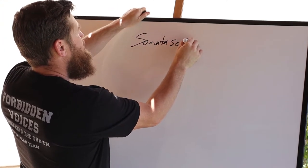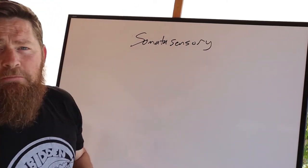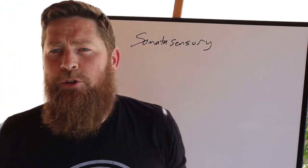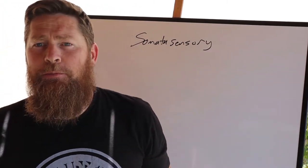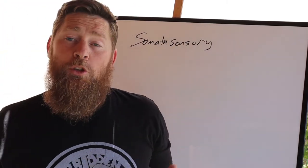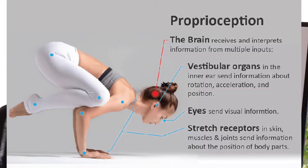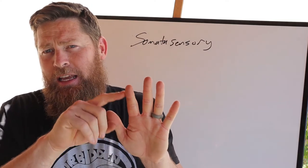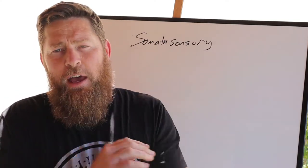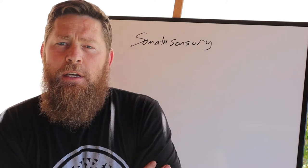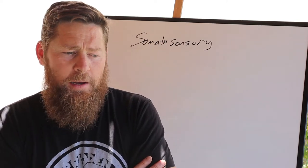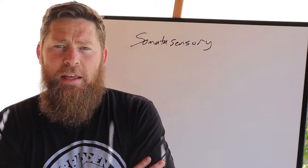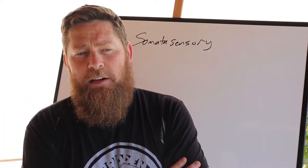Somatosensory — sometimes referred to as touch — doesn't just mean touch because it also includes things like proprioception, or your kinesthetic sense of where your body is in space. We have sensory neurons that are in each of our layers of the epidermis, not the outer layer, but they're inside the part that stays there.